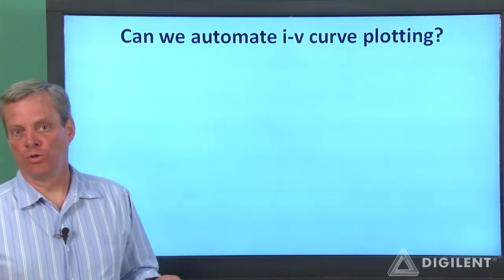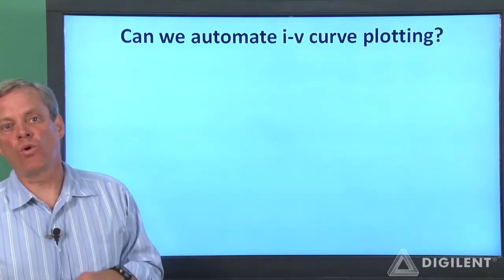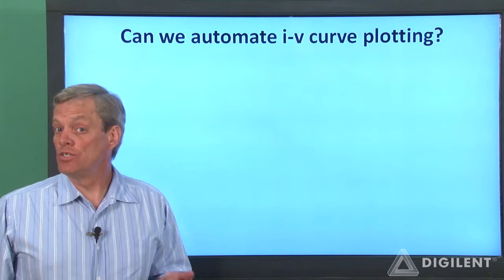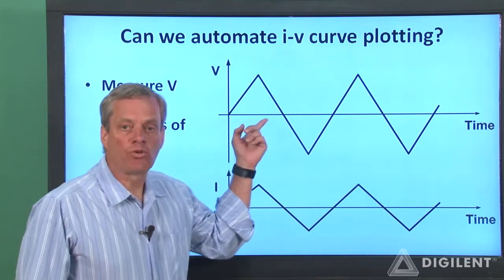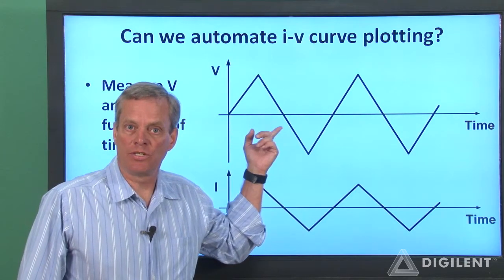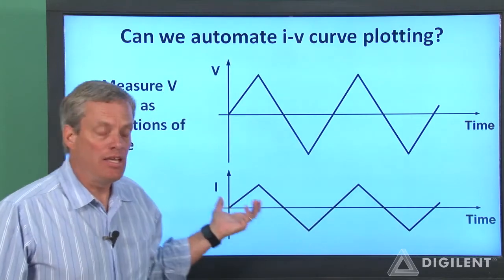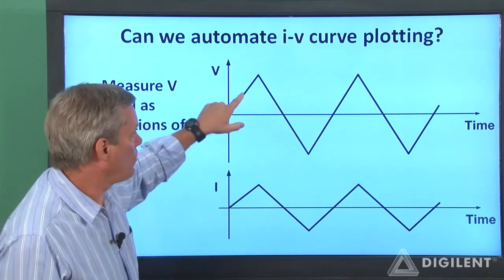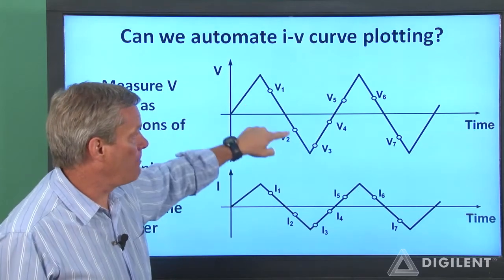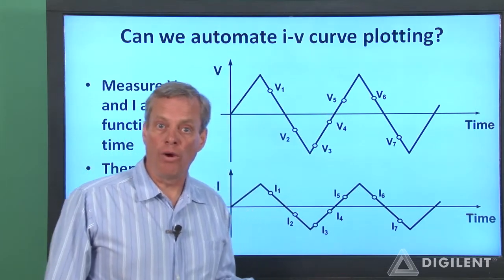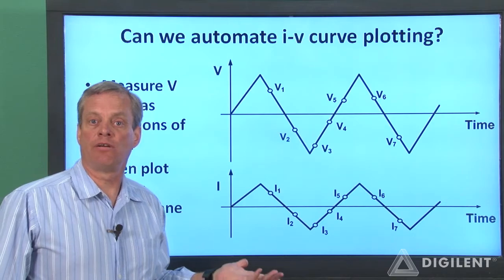Individually measuring a large number of voltage and current combinations is pretty tedious. Luckily, there's a way to more or less automate plotting these characteristics. To do this, we need to apply time-varying power to our circuit. Say that we apply a triangular voltage wave to a resistor — the resulting current waveform will also be triangular. Each point on the current curve will simply be the corresponding point on the voltage curve divided by the resistance. If we plot the voltage points against the current points, we'll have our voltage current characteristic curve.